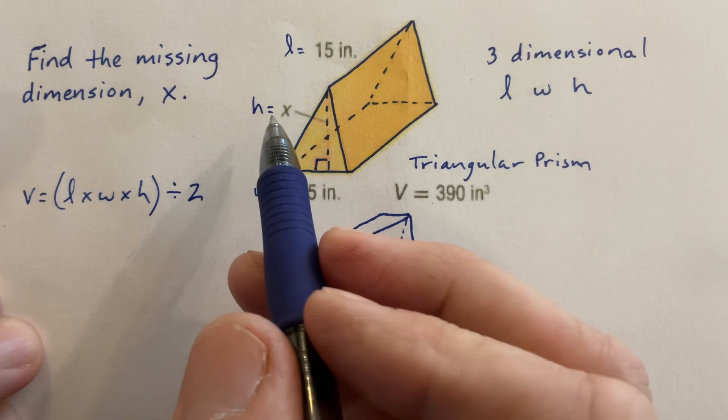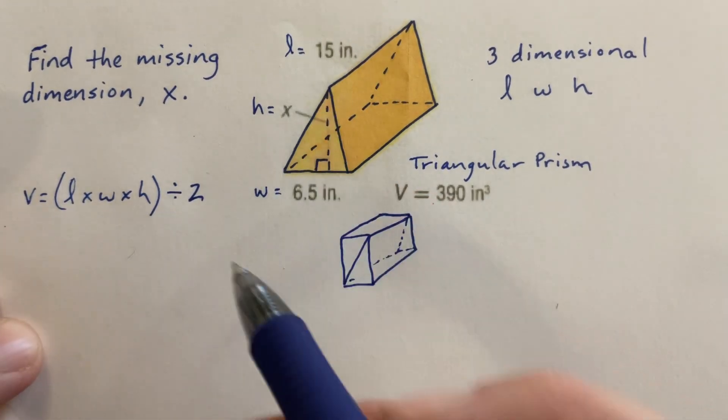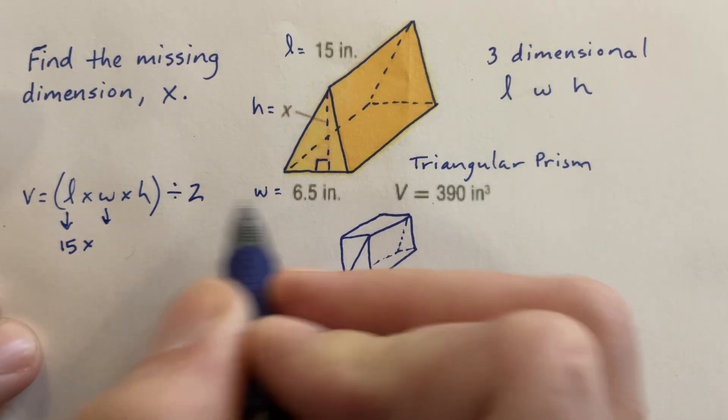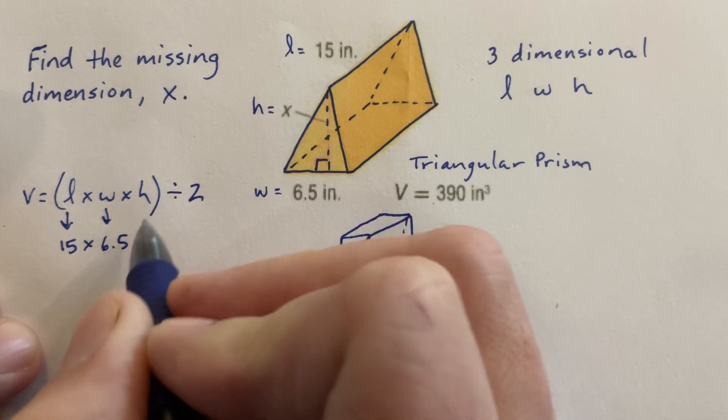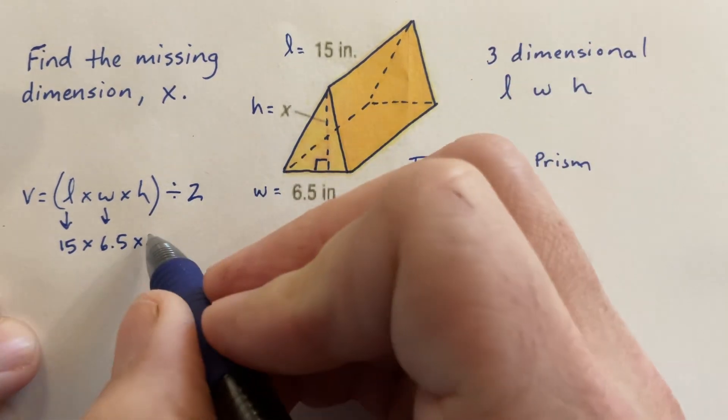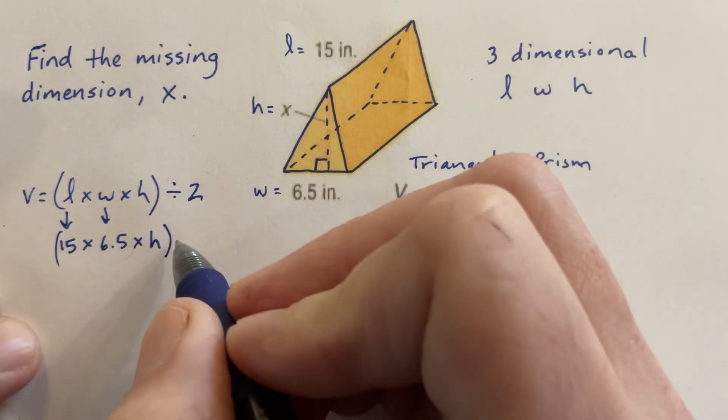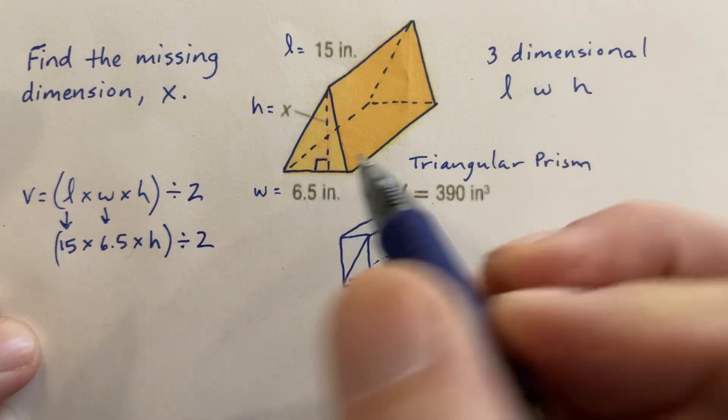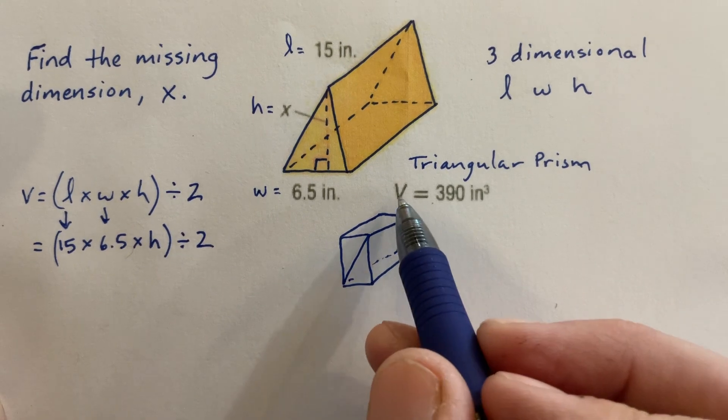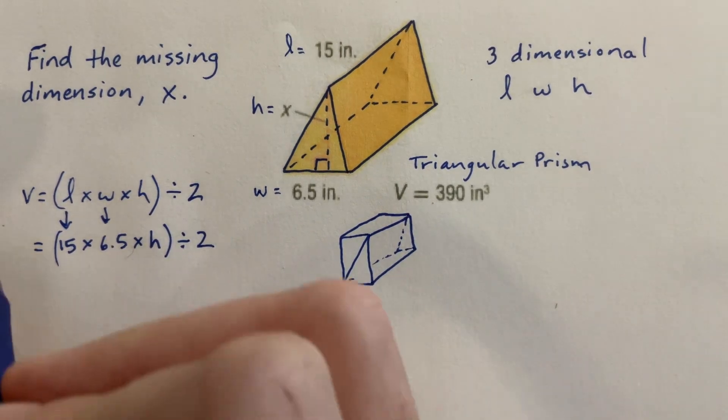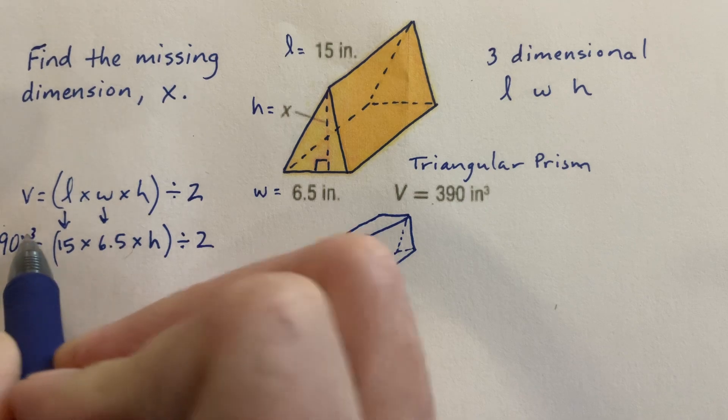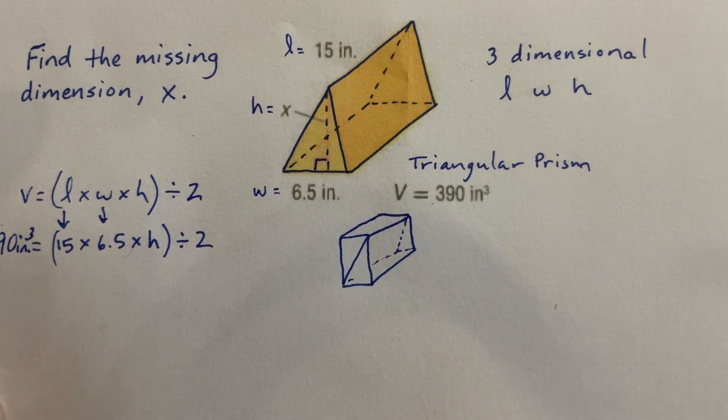To find this missing dimension, we're going to plug in all the knowns. We know the length here is 15 inches. We know the width is 6 and 1/2 inches or 6.5. The height is what we don't know, the x, how tall it is. So I'm going to leave the variable h there, and then finish out the equation with a divide by 2 because it's half of a rectangular prism. And then they gave us this other measurement, the big V is the volume. 390 inches cubed is the volume there.